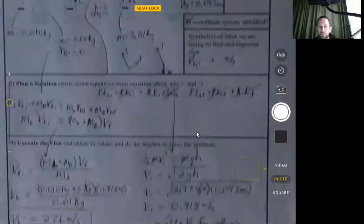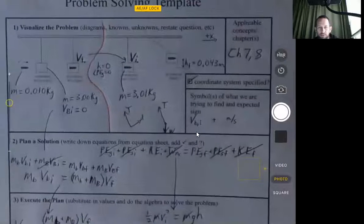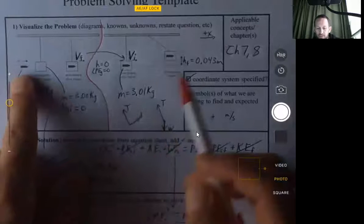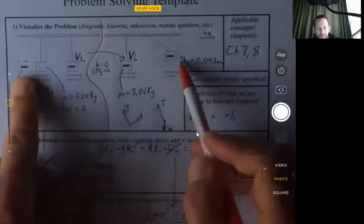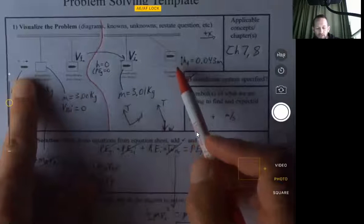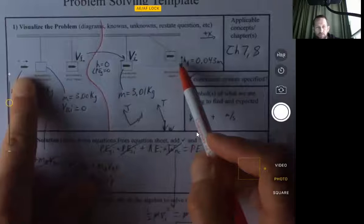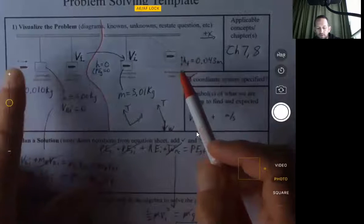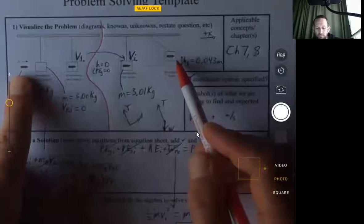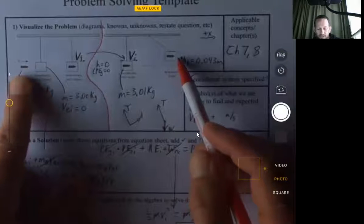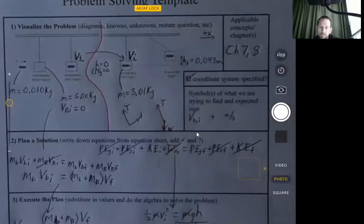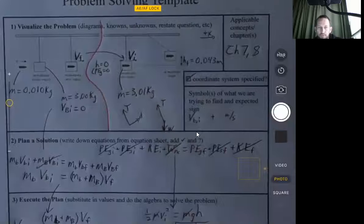I do want to emphasize that we could not have just solved using the conservation of mechanical energy from the very beginning to the very end, because there is a perfectly inelastic collision there. And for any inelastic collision, there's mechanical energy loss. So we couldn't just pick one initial and one final. We could not have done conservation of momentum for that whole time because there is a net external force acting on the system, which is gravity. So we did have to break it up into two parts.